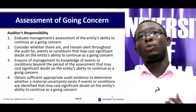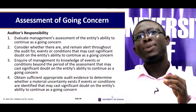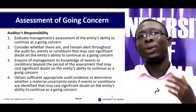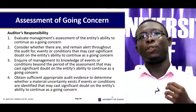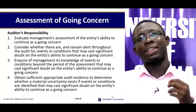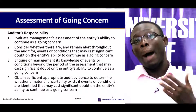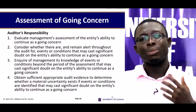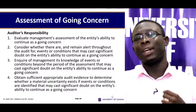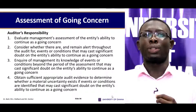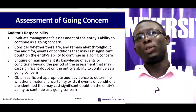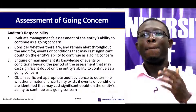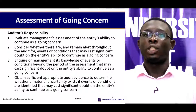The auditor is responsible for going concern in four ways. One: evaluate management's assessment of the entity's ability to continue as a going concern. Two: consider whether there are and remain alert throughout the audit for evidence or conditions that may cast significant doubt on the entity's ability to continue as a going concern. Three: inquire of management its knowledge of events or conditions beyond the period of assessment that may cast significant doubt. Four: obtain sufficient appropriate audit evidence to determine whether a material uncertainty exists if evidence or conditions identified may cast significant doubt on the entity's ability to continue as a going concern.